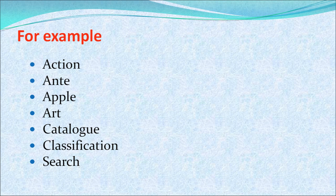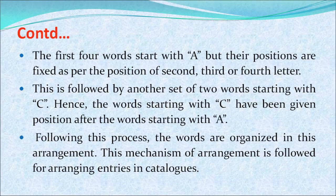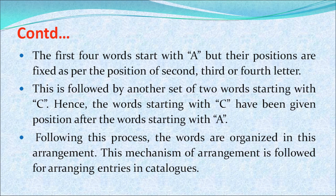For example, words like Action, Apple, Art, Catalog, Classification, and Search are arranged in dictionary order. The first three words start with A, and their positions are fixed as per the second, third, and fourth letters. This is followed by words starting with C, which are given positions after the words starting with A. Following this process, words are organized in this arrangement, and this mechanism is also followed for arranging entries in catalogues.